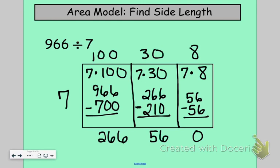So I know that 966 divided by 7 is going to be 138. I'm just going to go ahead and add up these numbers here on top in order to get my 138. That's just another method that you can use to divide if you're more familiar with the area model. Thank you.